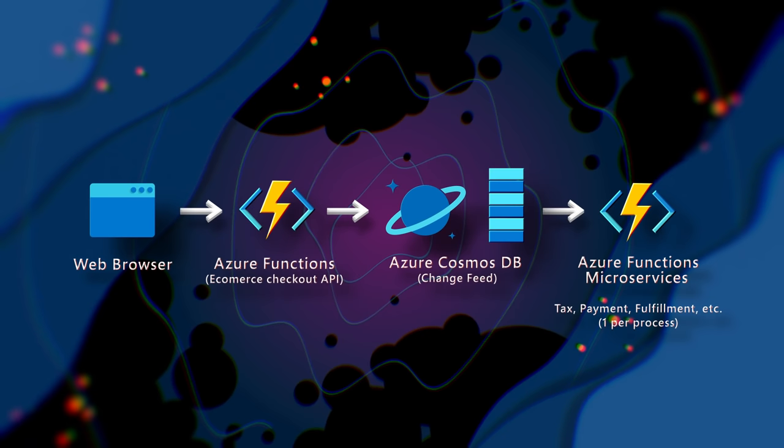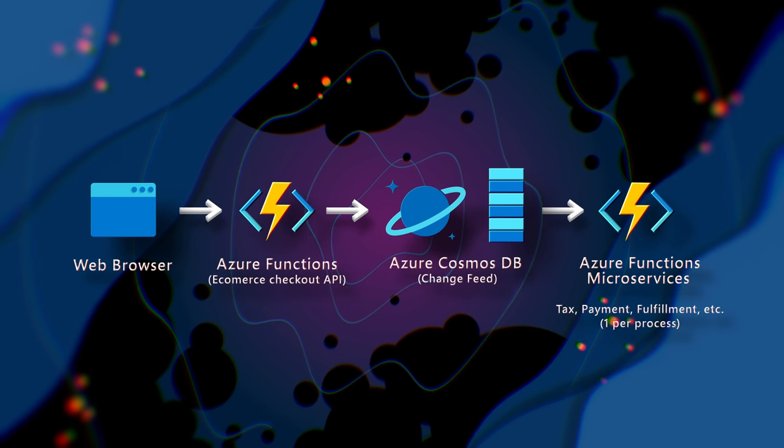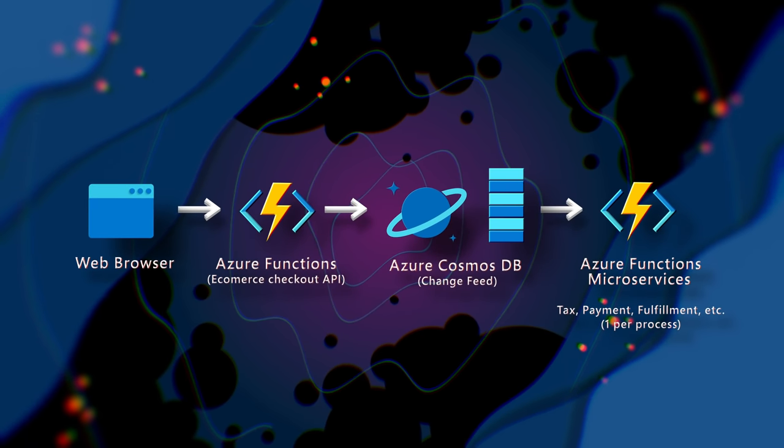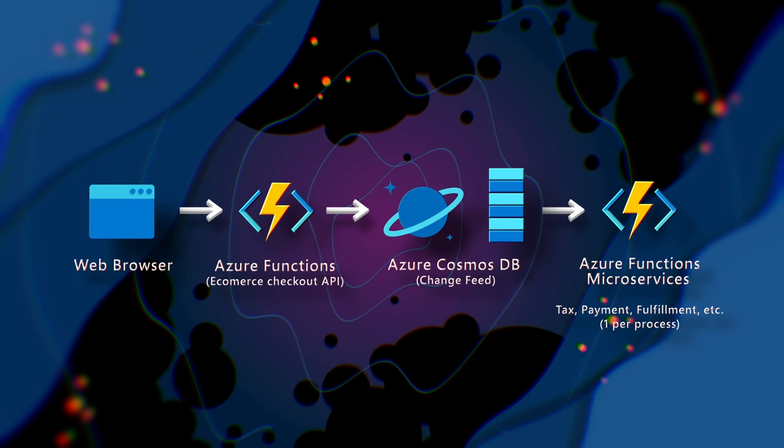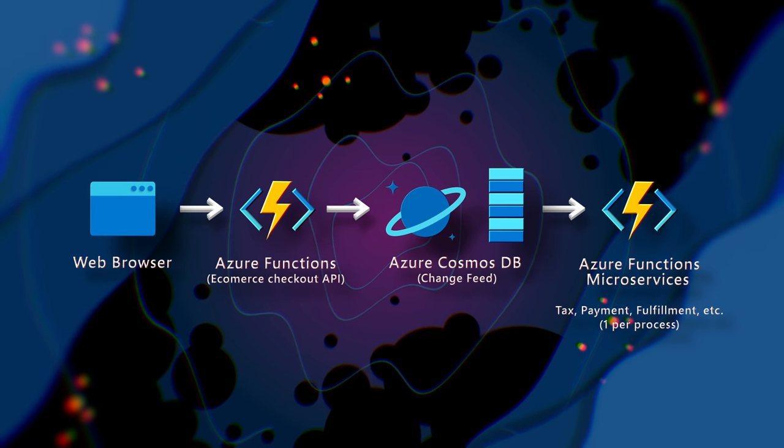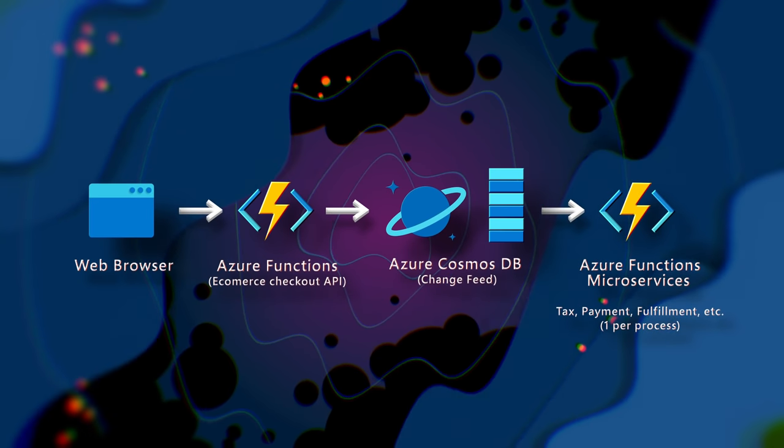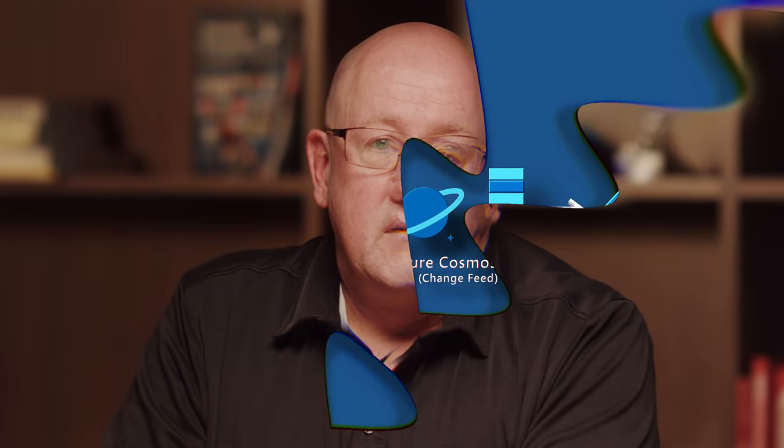Today we're going to talk about order processing for an e-commerce store, which is another really common use case for Cosmos DB. Here we want to take advantage of Azure Functions capabilities, specifically with the Cosmos DB trigger, which can allow us to help build event-driven microservices.